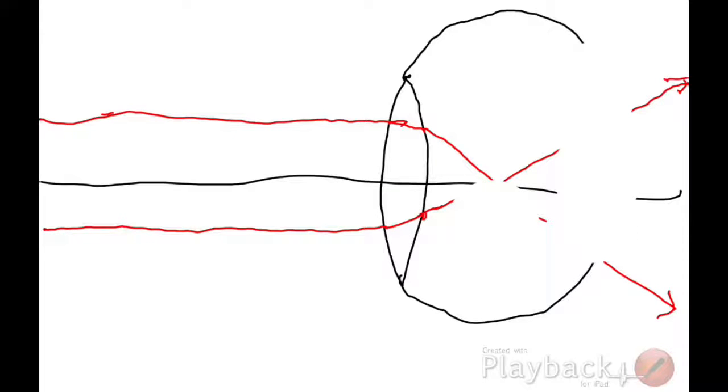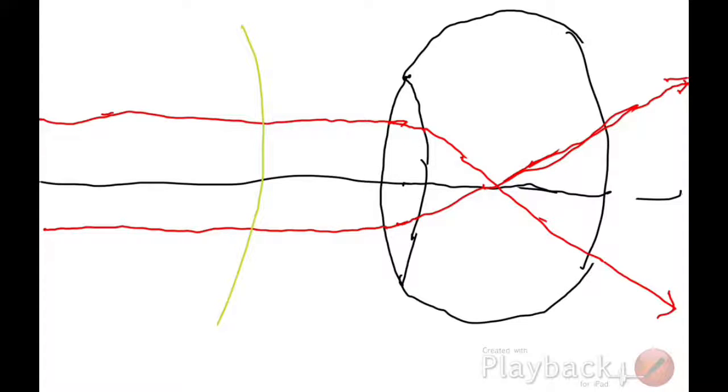So we can correct that with glasses. That's a common thing people do, is they wear glasses, and it helps them see. Well, how does that work, you might ask? Well, let's draw a ray diagram and think about how that works. So what we could do is we could potentially put a lens here, maybe like a concave lens. We could put a concave lens here and see what happens to the light when it hits this new medium.